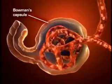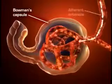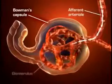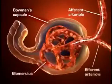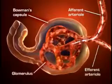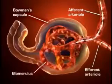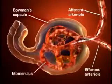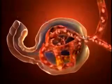Blood flows into the glomeruli through the afferent arterioles. Blood flows out of the glomerulus through the efferent arterioles. The afferent and efferent arterioles regulate glomerular capillary pressure by selectively dilating or constricting.